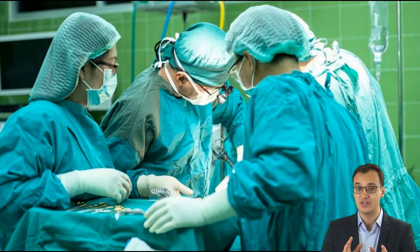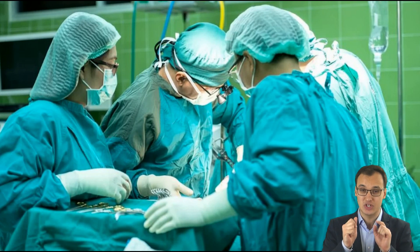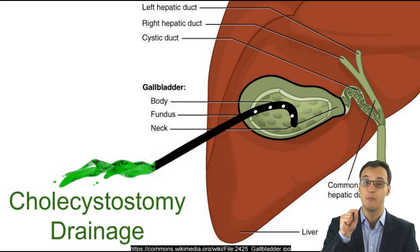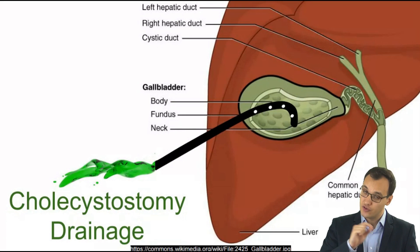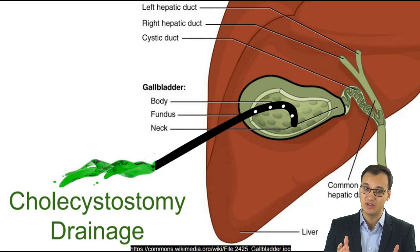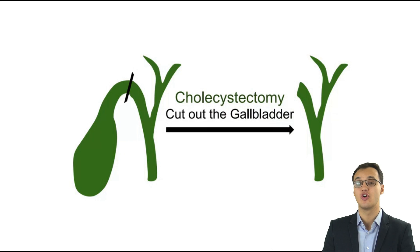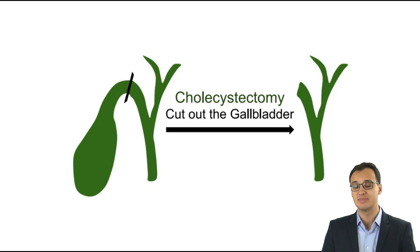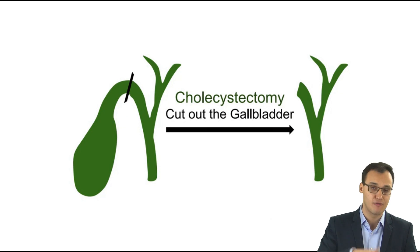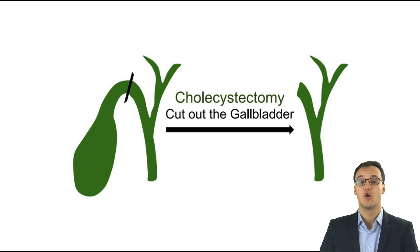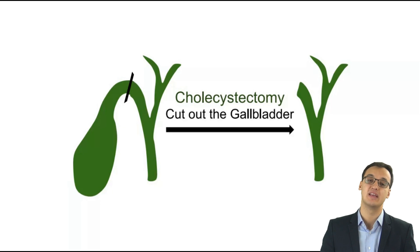It is very important to surgically operate as soon as possible. We usually start with cholecystostomy, but if there is no improvement within 24 hours after the operation, we proceed to cholecystectomy immediately. Sometimes, when there is gallbladder necrosis, perforation, or emphysematous cholecystitis, we start with cholecystectomy right from the beginning.